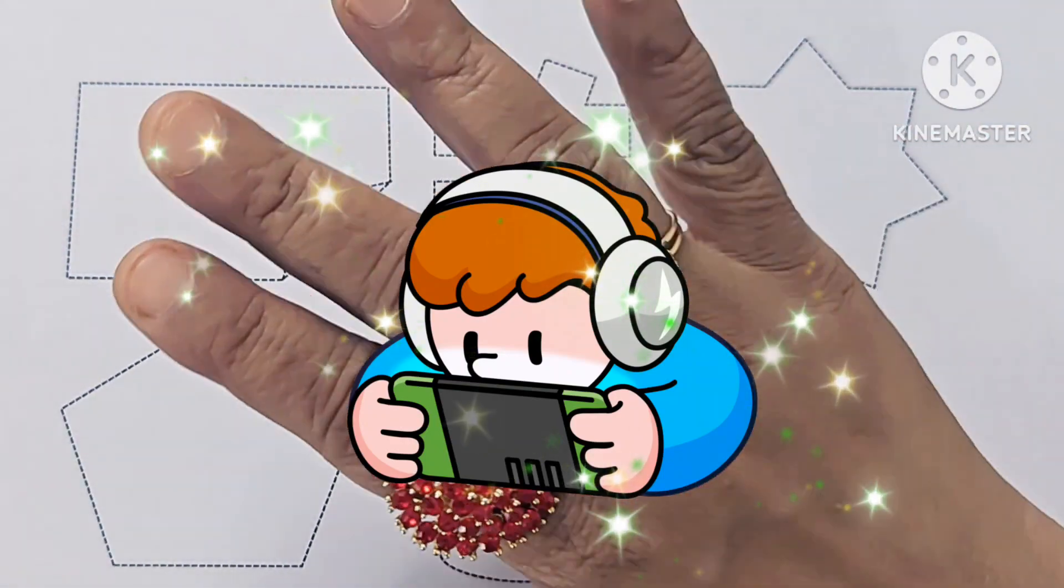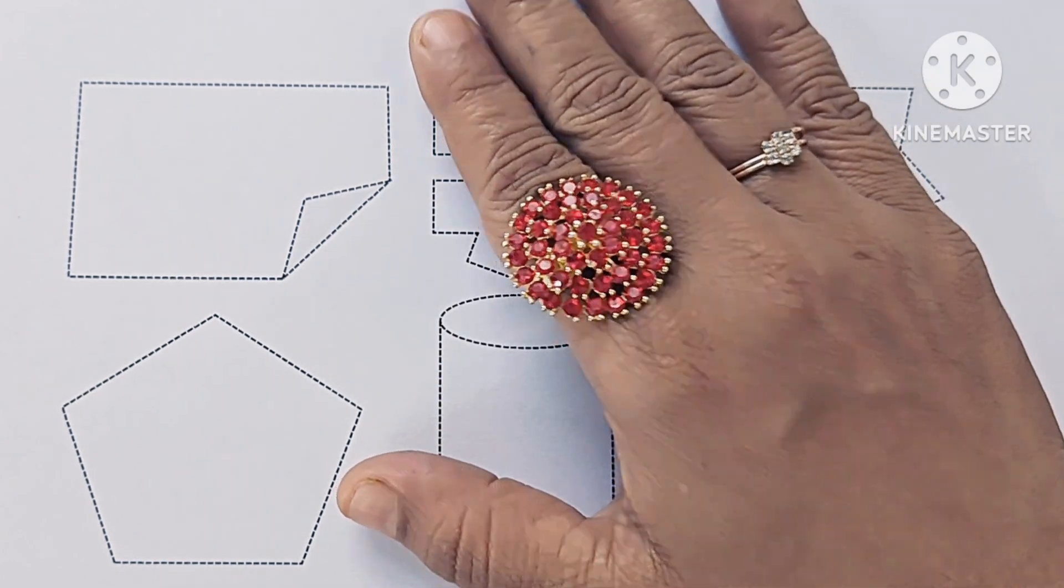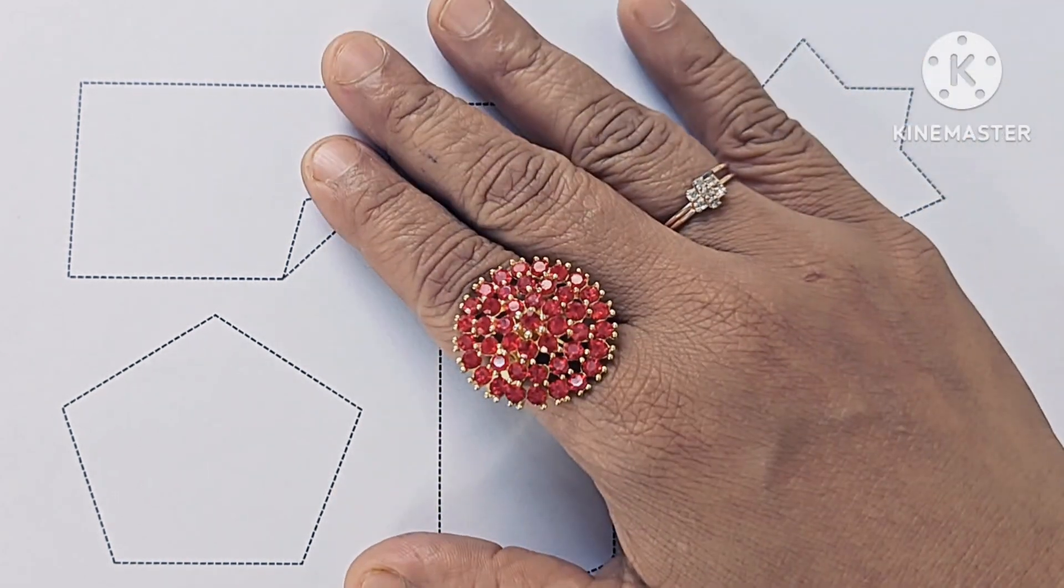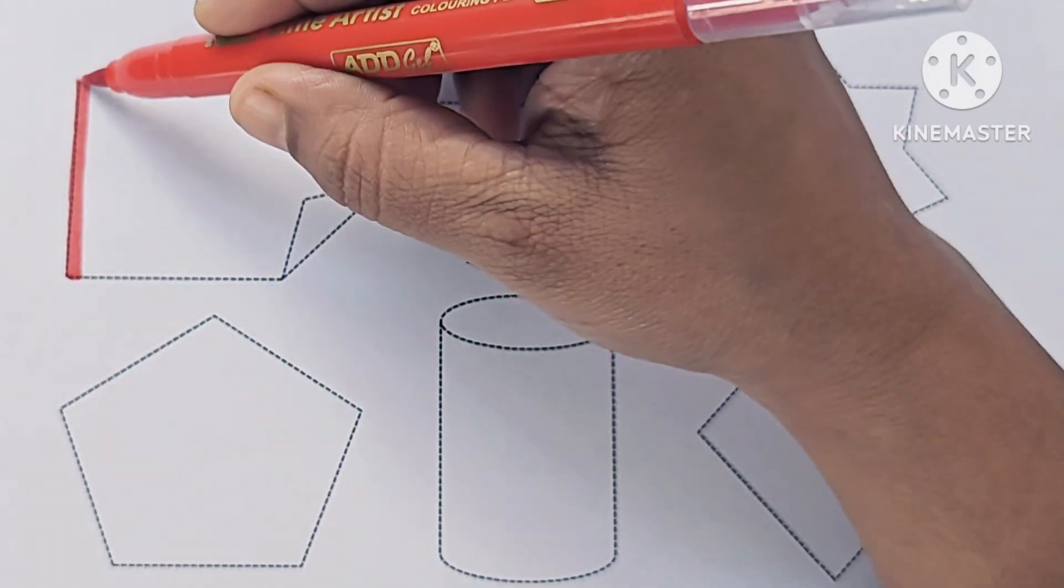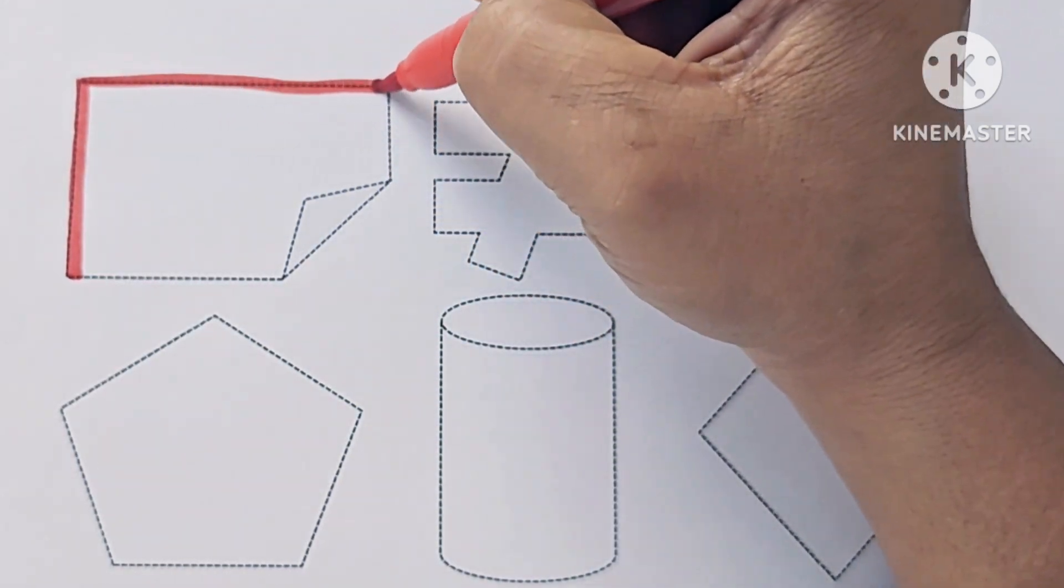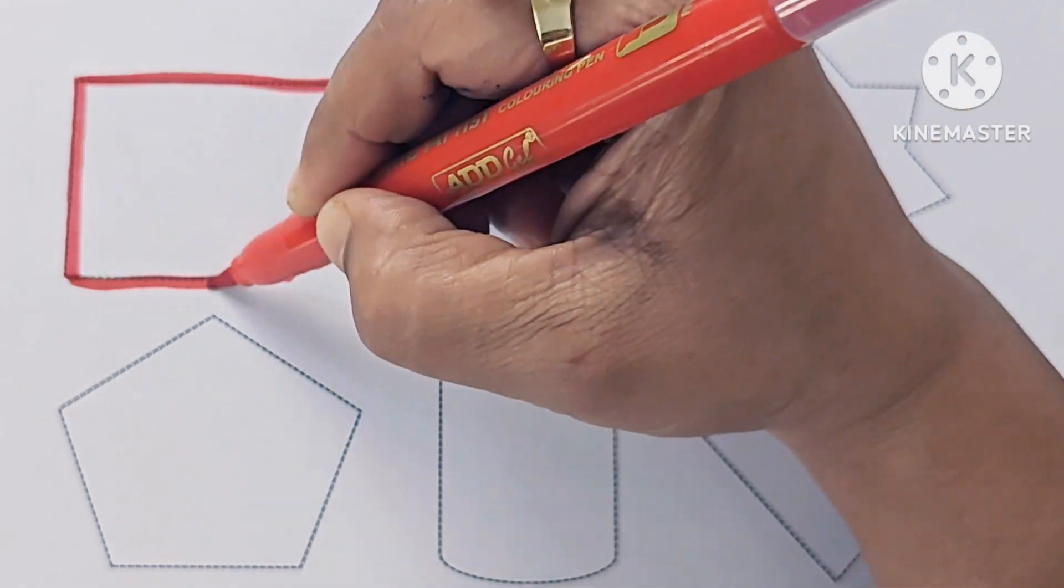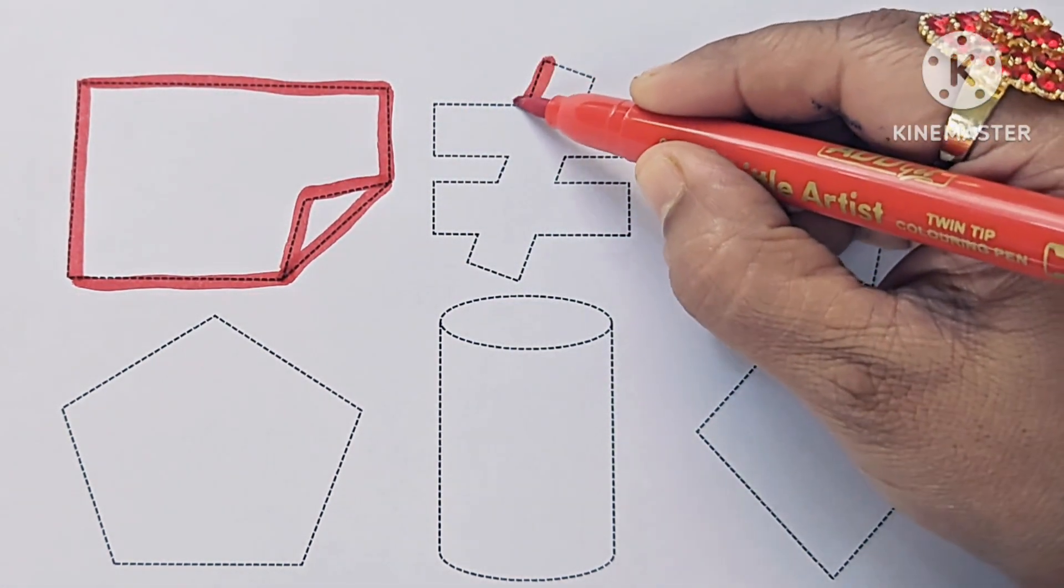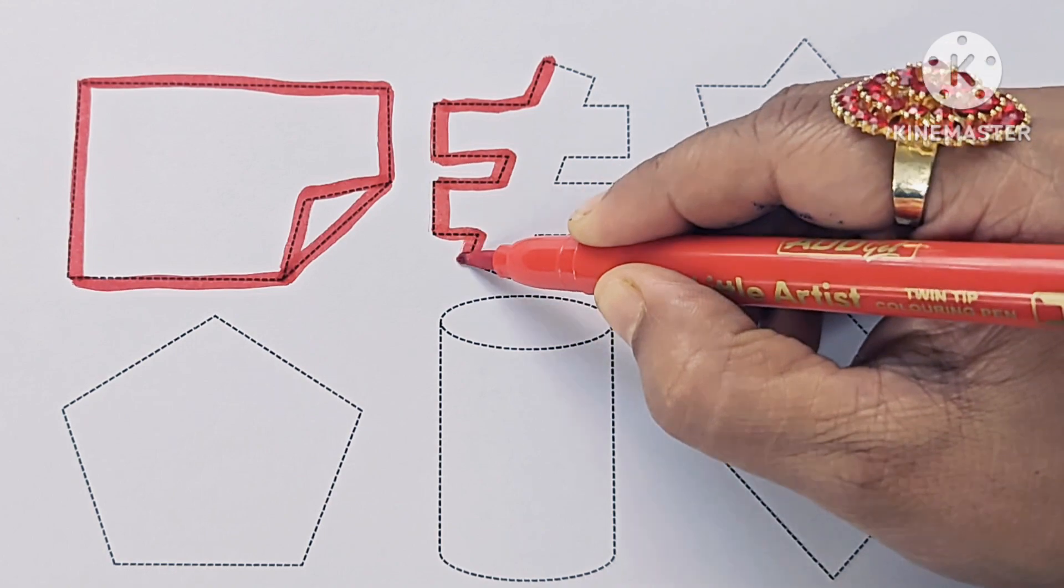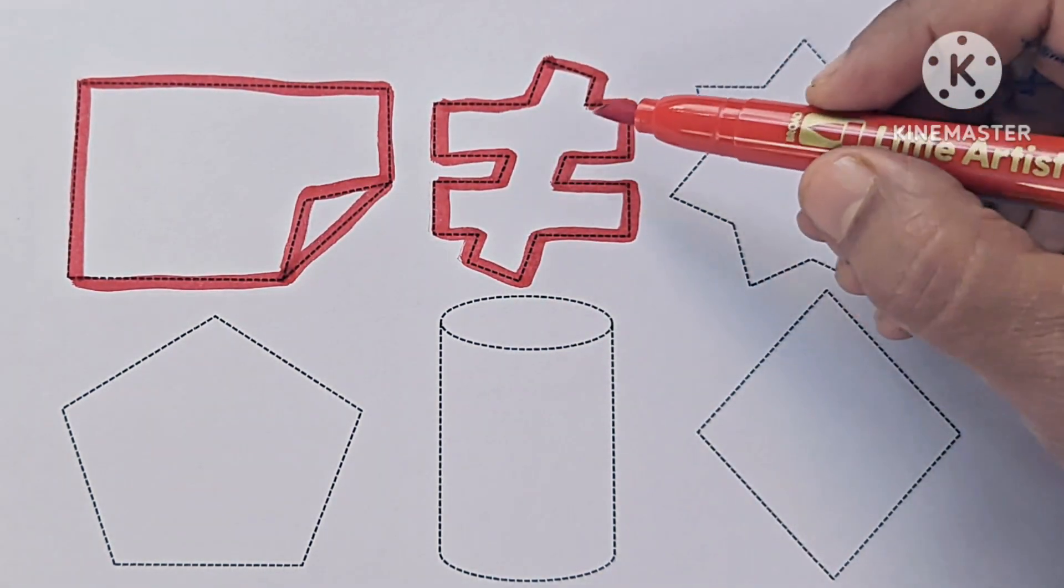Hello kids, in this video we will learn how to draw and color new shapes. If you are new to my channel please subscribe and like my channel. Let us draw shapes. This is red color, it is not equal to symbol.